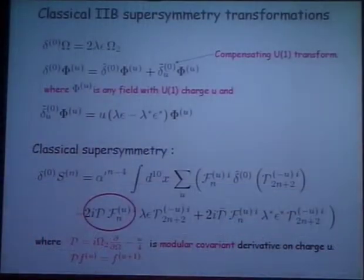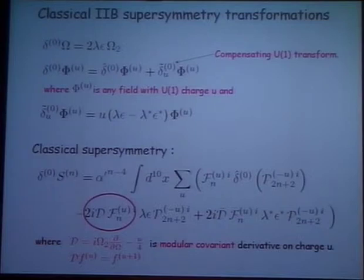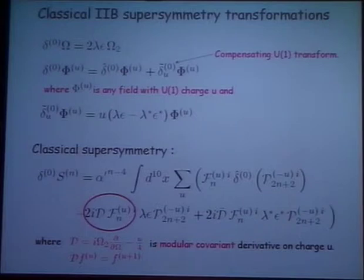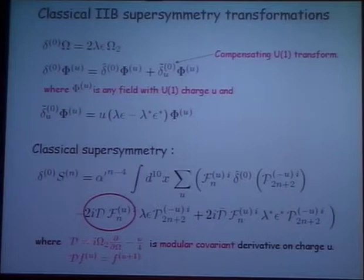Applying delta zero to an arbitrary term gives two kinds of terms. Either delta zero hits this expression P, or it hits F. When it hits F, it varies the omega inside F, and you get a covariant derivative — or you get an ordinary derivative on F — but then the pieces, the compensating U(1) transformations, add together to covariantize the derivative. So the important point is the structure of a variation of an arbitrary term: it has a covariant derivative of F, where the covariant derivative is a modular covariant derivative which acts on any function of spin U, changing it to U plus 1.